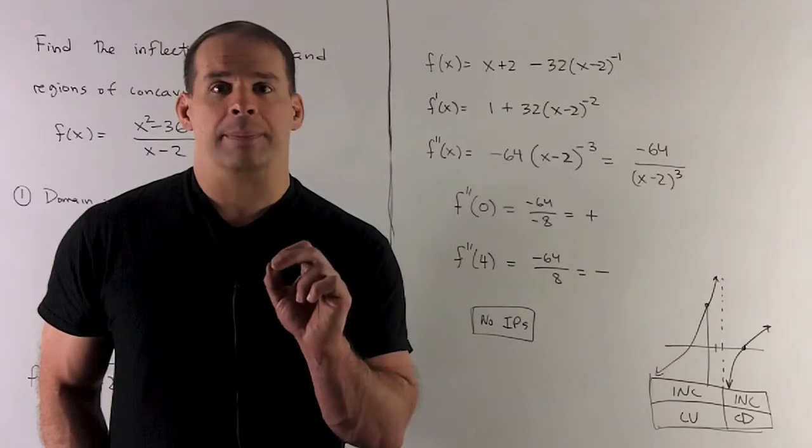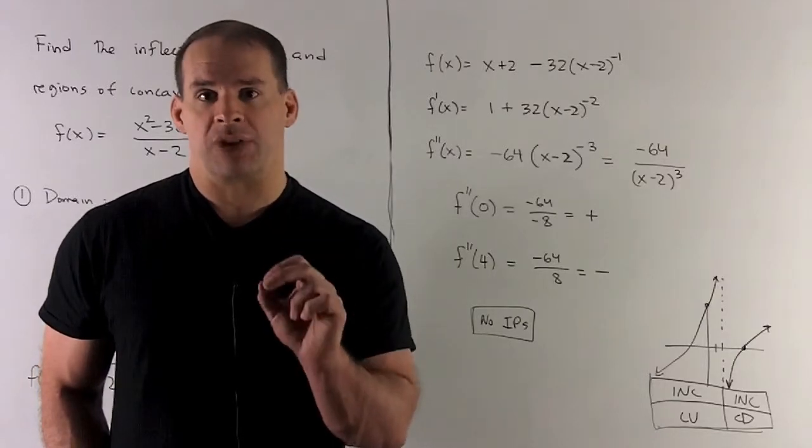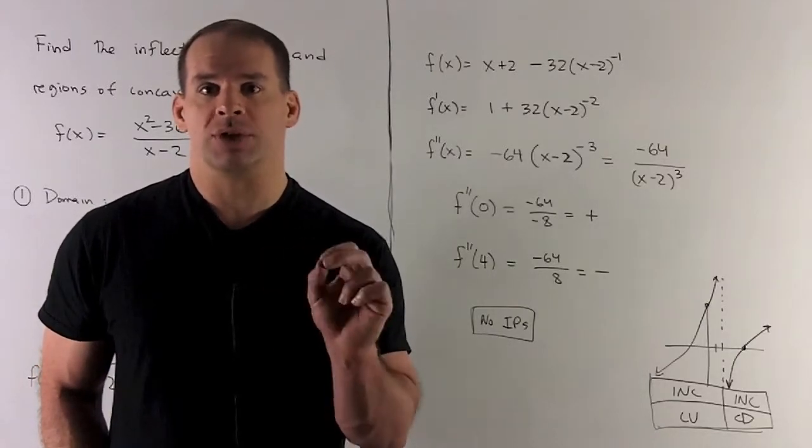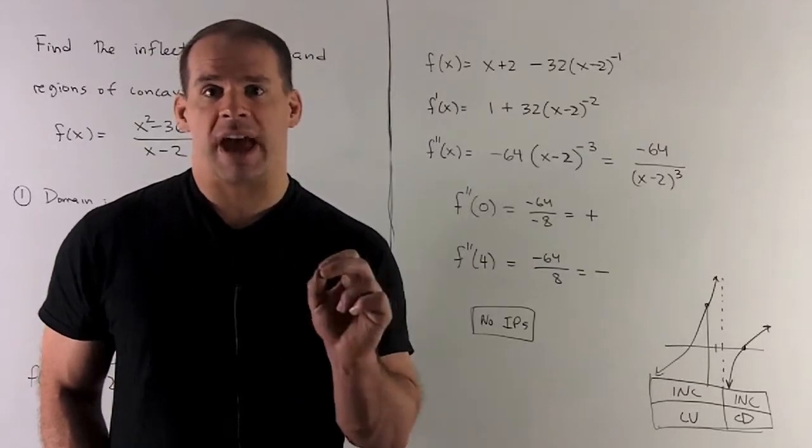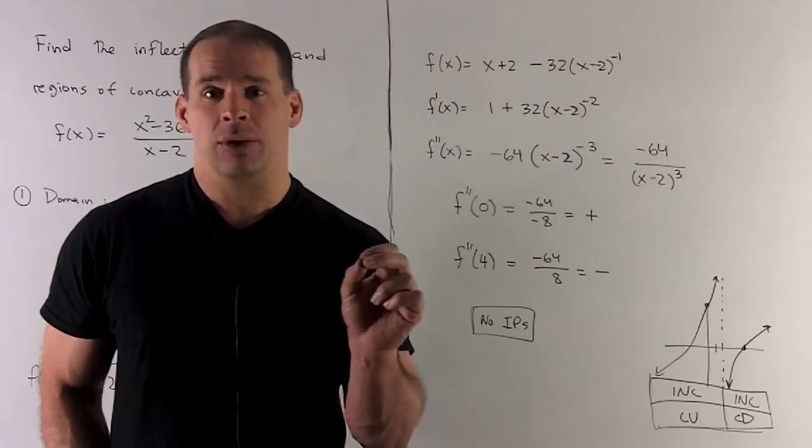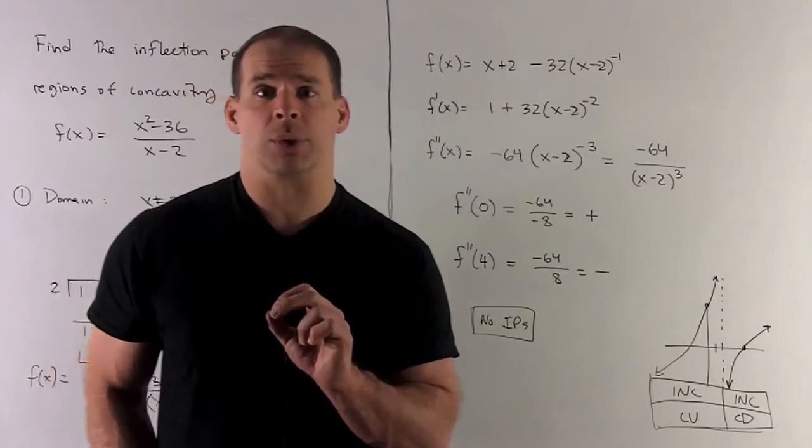So right off the bat, we won't have any inflection points. There's no points where we're going to have a change of concavity that's not happening over our vertical asymptote.